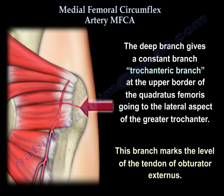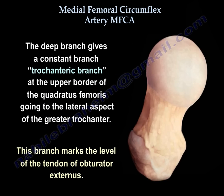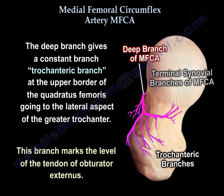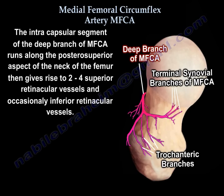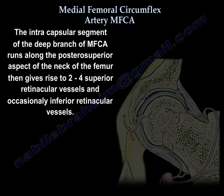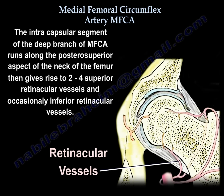The deep branch gives a consistent trochanteric branch at the upper border of the quadratus femoris, going to the lateral aspect of the greater trochanter. This branch marks the level of the tendon of the obturator externus. The intracapsular segment of the deep branch runs along the posterior superior aspect of the neck of the femur, where it gives rise to two to four superior retinacular vessels and occasionally inferior retinacular vessels.